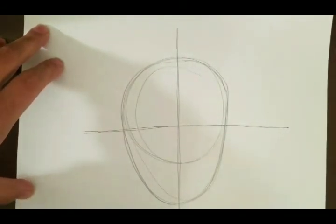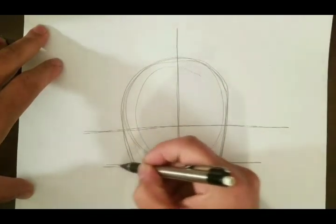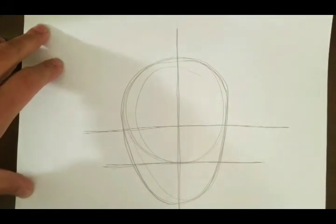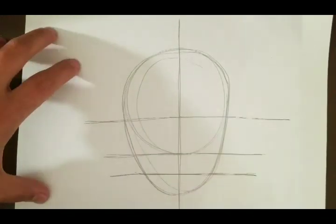In this bottom section, halfway through that bottom section, we're going to draw another horizontal line. And in this bottom section, we're going to draw one more horizontal line. Now we have our sections.